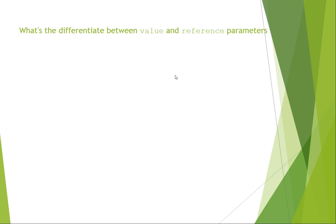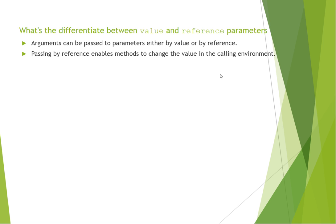So what's the difference between value and reference in the way the parameters? Arguments can be passed to parameters either by value or by reference. Depending on the type they are, they are usually passed by value or reference, but we can actually force them into being passed by a reference if we want to.